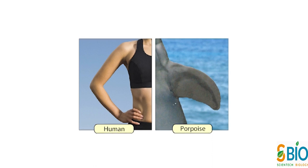Example के लिए Humans और Porpoises के 4 Limbs को Consider कर लीजिए। यहाँ Humans ने Surf World पर Balance के लिए अपने Arm का उपयोग किया और Porpoises ने अपने पंखों का उपयोग पानी के भीतर Steering के लिए किया। इन दोनों के Arms के Appearance और Functions में Difference होने के बावजूद इनके Structure में Similarities देखने को मिलती हैं।